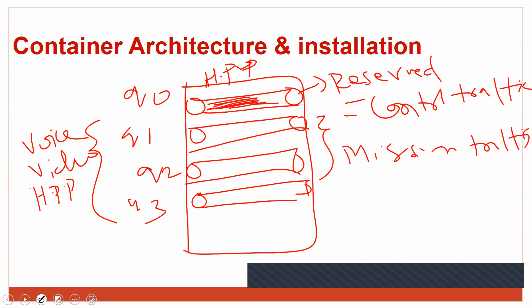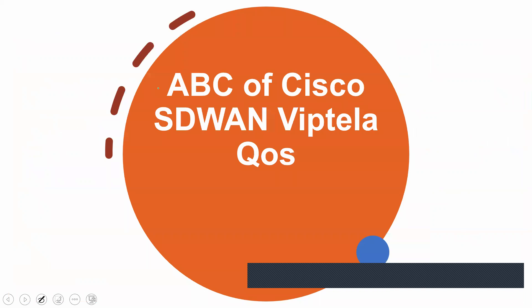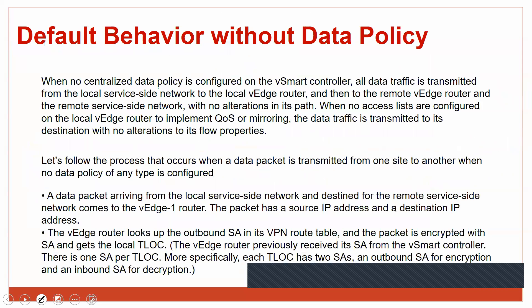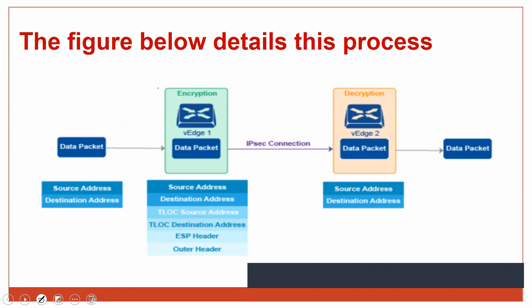You should classify traffic into mission-critical, mid-range, and low-range categories, then assign them to the appropriate queues or priority queues. This is how you manage congestion. Congestion management and congestion avoidance are very important QoS components, along with classification and marking. Now let's understand how QoS is applied in SD-WAN specifically.